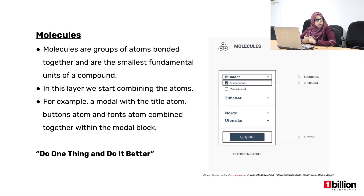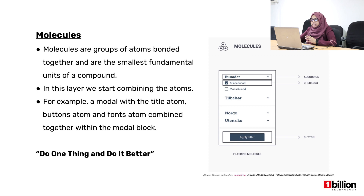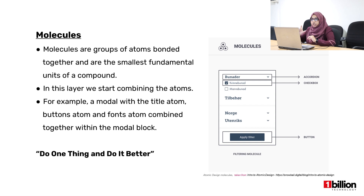Using these atoms, we bond them to create molecules, which are the smallest components within a UI page. For example, you can see in the image to your right — you have atoms like the accordion, the checkbox, the button. These are atoms that have been bonded together to create the filtering module, which is one section of the UI page — that's the molecule created by various atoms.